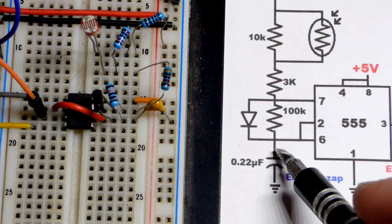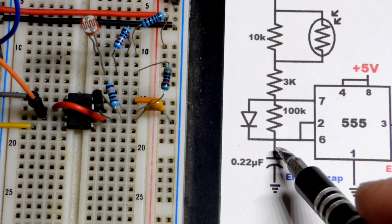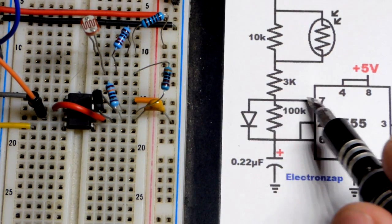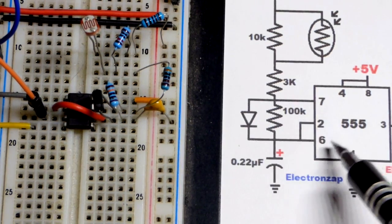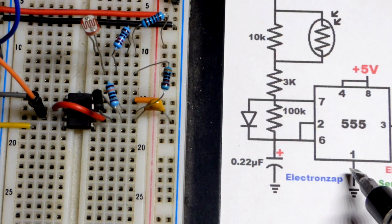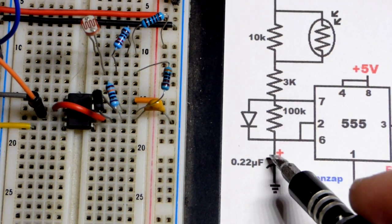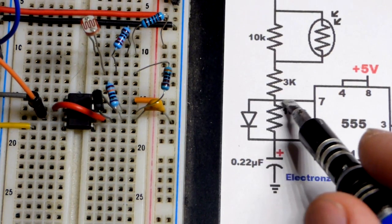That's when the output's high. When it's discharging all the current goes through the 100k resistor while it's discharging because it can't go through the diode that way. Any current making it through here also goes to ground so that won't affect the discharge time.